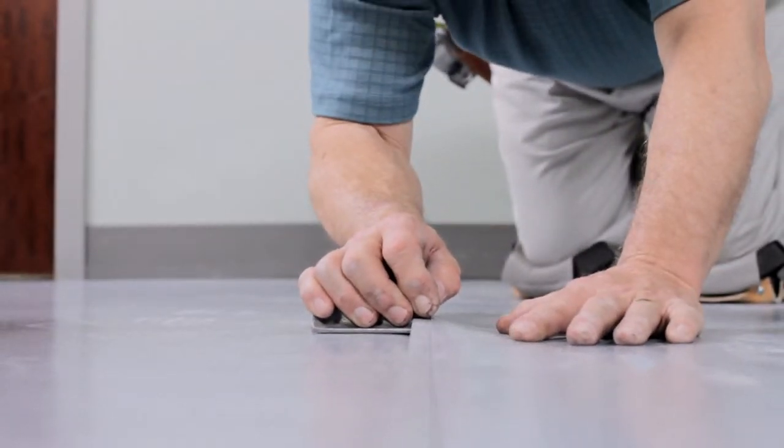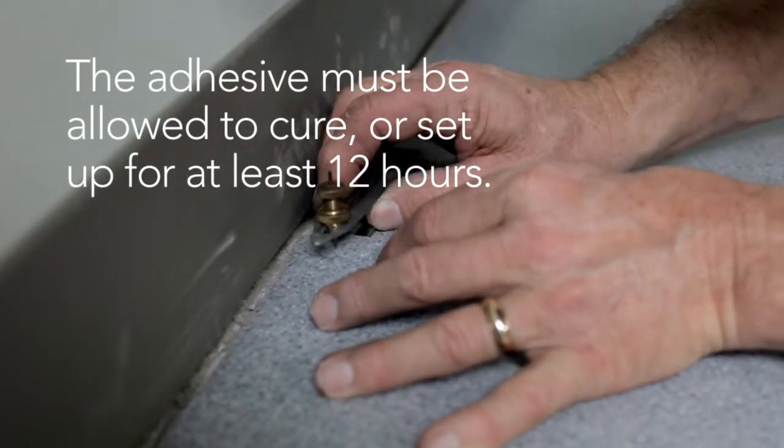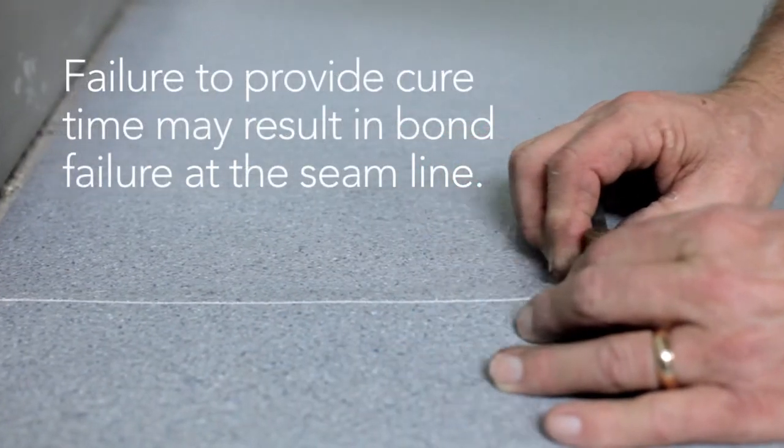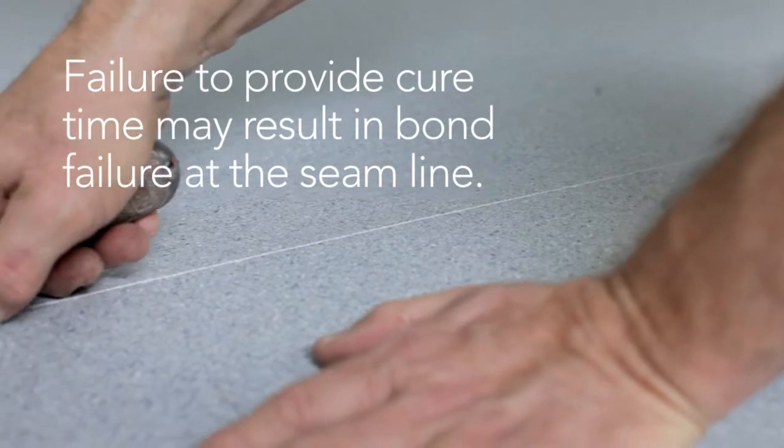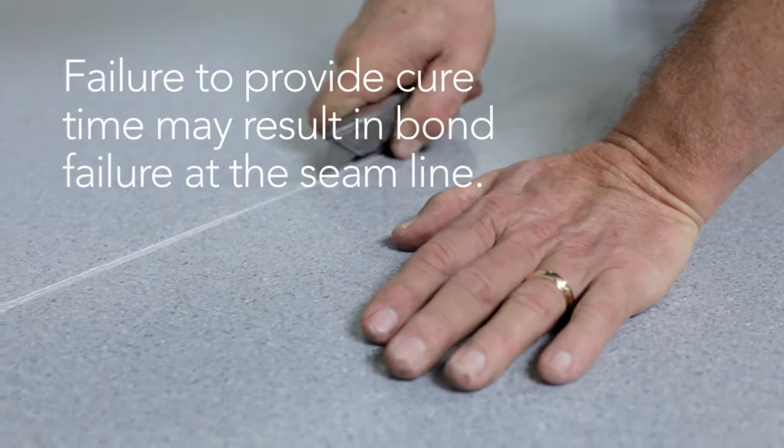The adhesive used to fasten the sheets must be allowed to cure or set up for at least 12 hours to be sure the moisture in the adhesive has dissipated. Failure to provide this cure time may result in bond failure at the seam line, which shows up as a split seam. This may not become evident for months after the installation is completed.